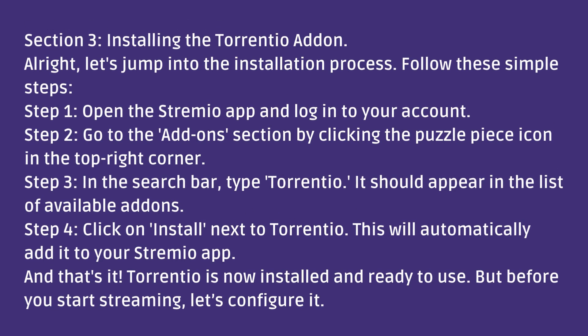Section 3: Installing the Torrentio add-on. Let's jump into the installation process. Step 1: Open the Stremio app and log into your account. Step 2: Go to the add-on section by clicking the puzzle piece icon in the top right corner. Step 3: In the search bar, type Torrentio — it should appear in the list of available add-ons. Step 4: Click Install next to Torrentio. This will automatically add it to your Stremio app. Torrentio is now installed and ready to use, but before you start streaming, let's configure it.